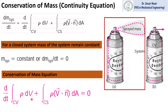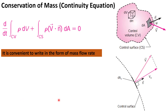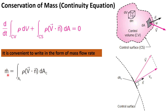This continuity equation is in integral form, in which we have a volume integral and a surface integral. We can simplify this integral form of the equation by writing it in terms of mass flow rate. Rho V delta V represents the mass, and we also have the definition of mass flow rate.